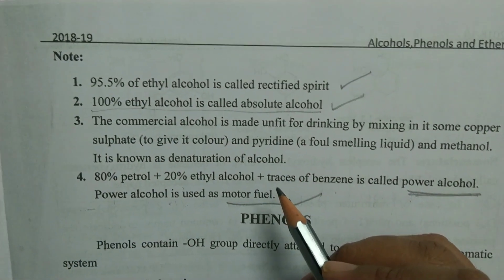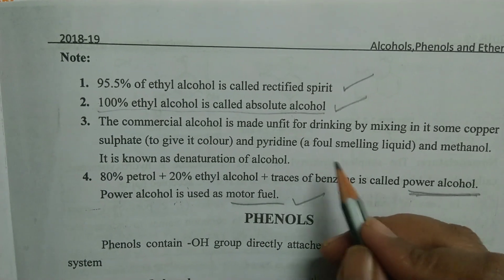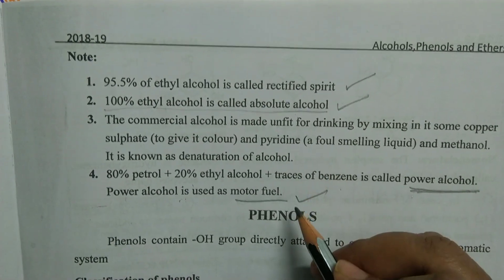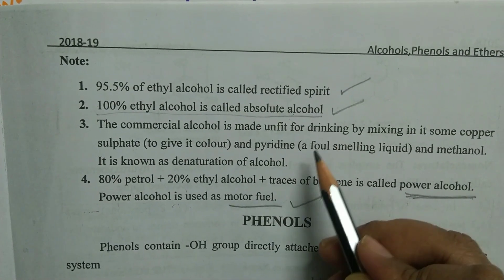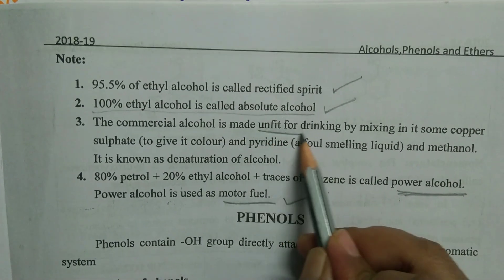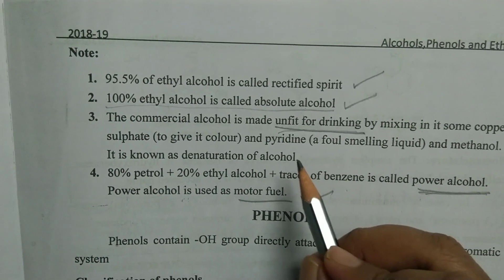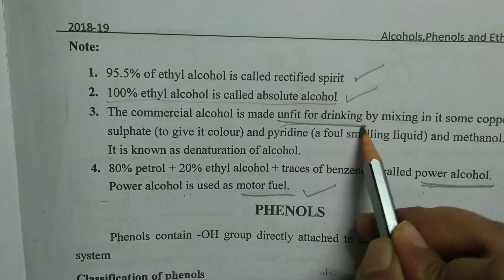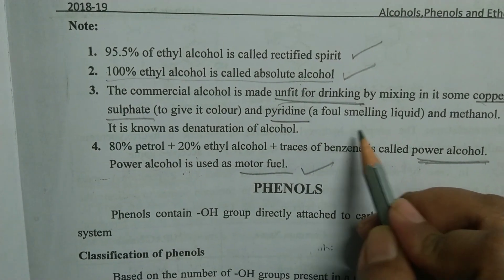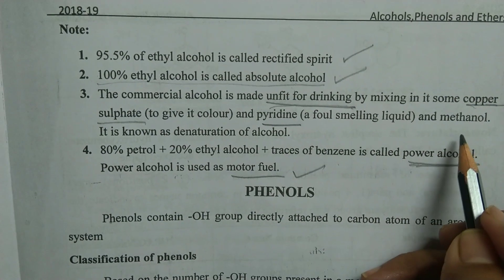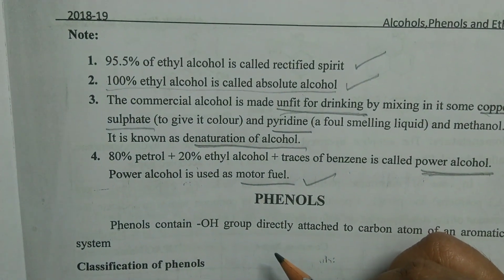Methanol is very dangerous when taken in place of ethanol, as it may cause death and even blindness. To make it unfit for drinking, it is mixed with copper sulfate to give it color and pyridine to give it a foul smell. This alcohol is called denatured alcohol and the process is called denaturation of alcohols.